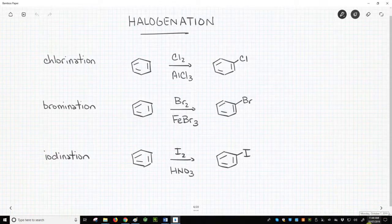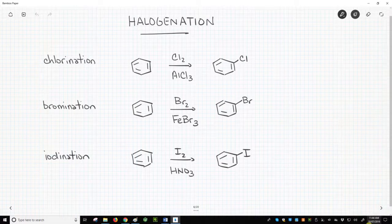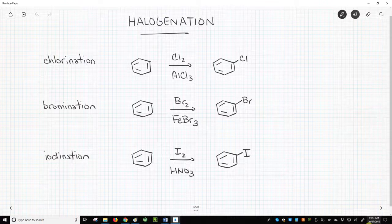EAS reactions can add a chlorine, bromine, or iodine to a ring. Sorry, fluorine. And the required reagents for each reaction are shown on this slide.